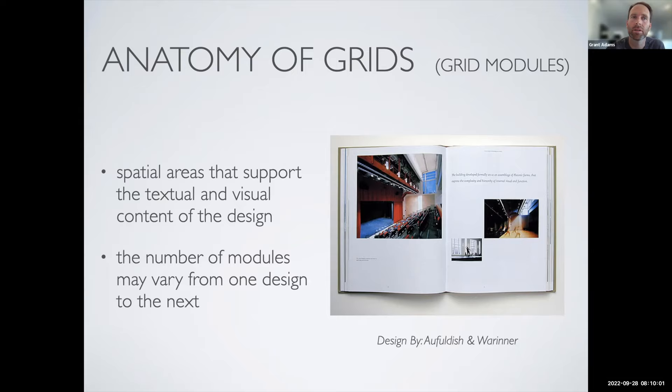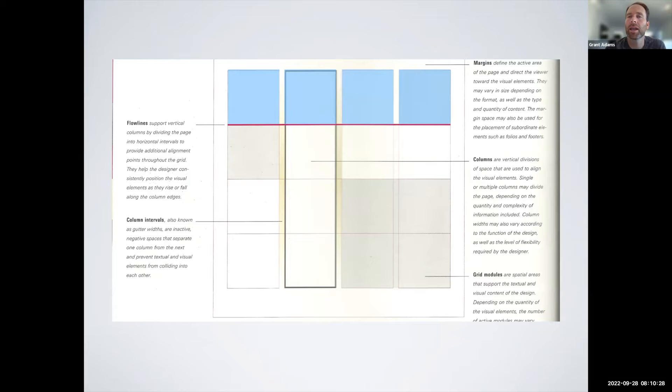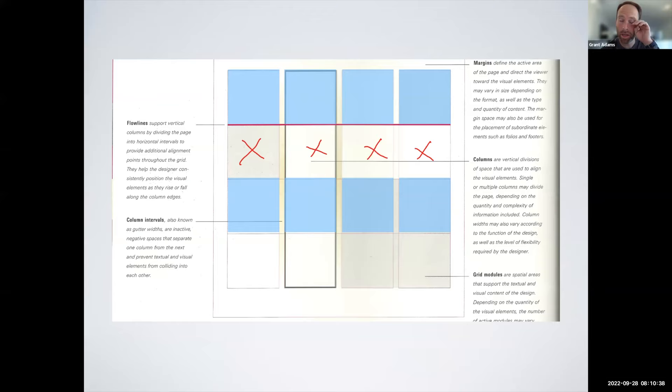The grid module is essentially the combination of a column interval and a flow line, giving us one little block on a particular page. They're designed to support the text and visual elements and give an underlying structure. The number of modules can vary from one design to another. We don't always have every module filled with just one image — sometimes two are added together and text spans across two grid modules. We can break the grid intelligently at any point.